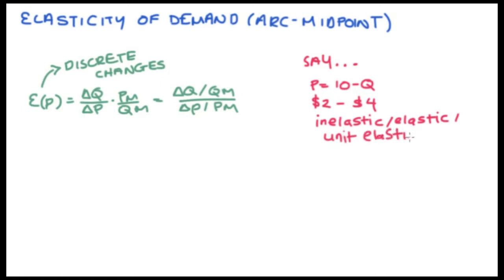Okay good, so we can use either one of our formulations of the arc elasticity of demand formula. All we need to do is write down all the different components and then find them one by one. So we have change in Q, that's the change in quantity given the price change, the midpoint of that change in quantity, the change in price, and the midpoint of the change in price.